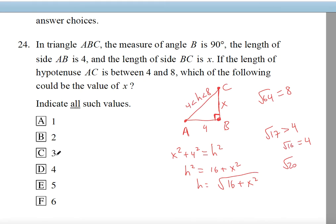Checking X=3: 16 plus 9 gives radical 25, definitely less than radical 64. Checking X=4: 16 plus 16 gives radical 32, less than radical 64. X=5: 25 plus 16 gives radical 41, less than radical 64. And finally X=6: 36 plus 16 gives radical 52, which is also less than radical 64.